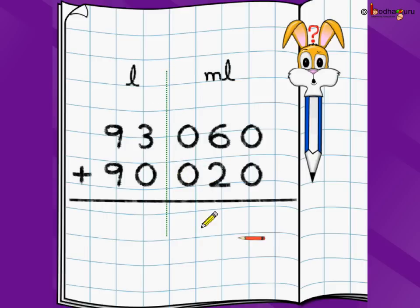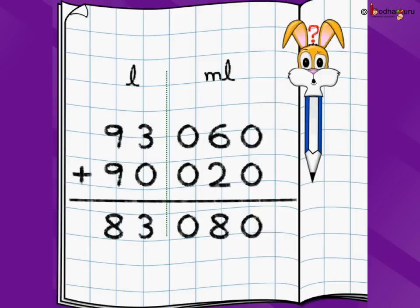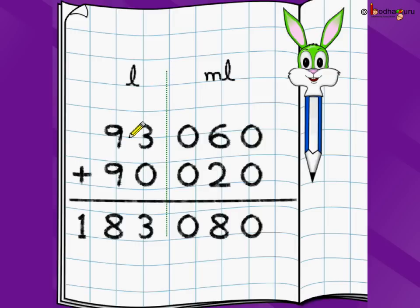We draw a dotted line and start addition from the rightmost digit. 0 plus 0 is 0, 6 plus 2 is 8, 0 plus 0 is 0, 3 plus 0 is 3, 9 plus 9 is 18. So the answer is 183 liters and 80 milliliters. Both numbers were written with milliliters below milliliters and liters below liters, and if the milliliter number has fewer than three digits we prepend a zero, like 060 or 020.